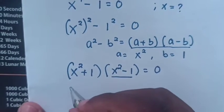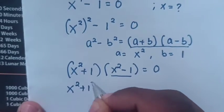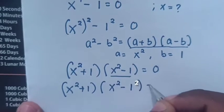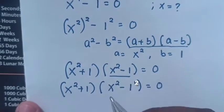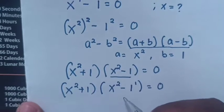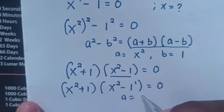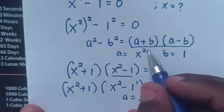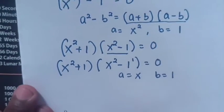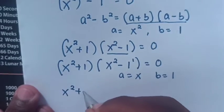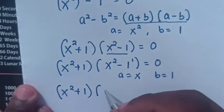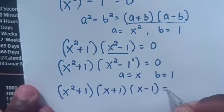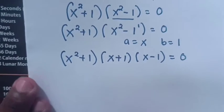From (x² - 1), we apply the same difference of squares rule again. So the equation becomes (x² + 1)(x² - 1) = (x² + 1)(x + 1)(x - 1) = 0, where a equals x and b equals 1.